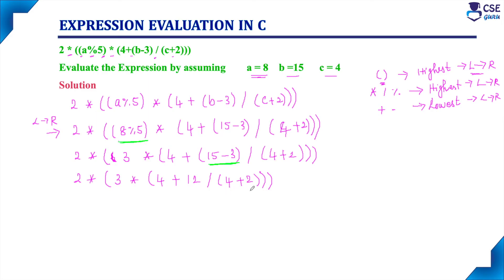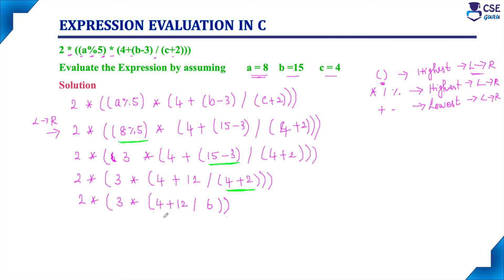Next, within the remaining bracket, 4 + 2 is evaluated: 4 + 2 = 6. The expression becomes 2 * 3 * 4 + 12 / 6. Now considering the remaining operators — whether to evaluate 4 + 12 first or 12 / 6 first — based on priority, division is having the highest priority, so 12 / 6 is evaluated first.